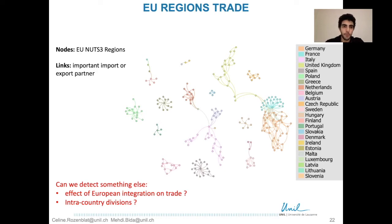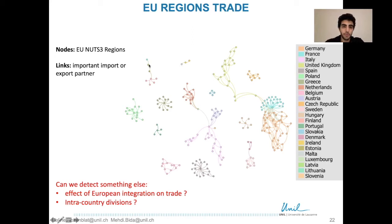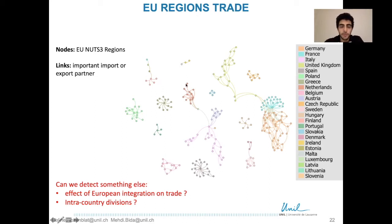Our first example is the trade network of EU regions, presented previously. A node represents a European Union region, and a link between two nodes exists if one of the regions is an important import or export partner to the other region. We colored the nodes with respect to the countries of the regions they represent.